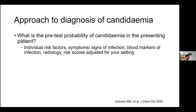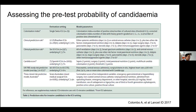The approach to diagnosis of candidemia starts with the pretest probability of candidemia in the patient in front of you. This depends on individual risk factors, signs and symptoms of infection, general blood markers of infection — elevated CRP, procalcitonin, white cell count, platelets — radiology, and risk scores adjusted for your setting.